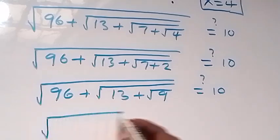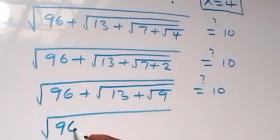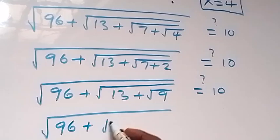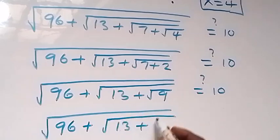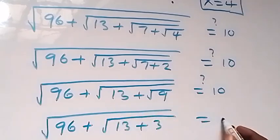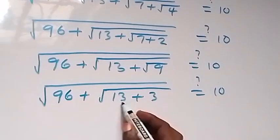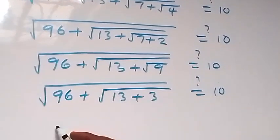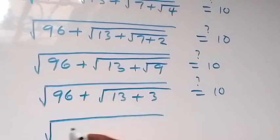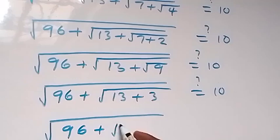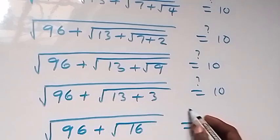Then we have square root of 96 plus square root of 16, which equals to 10. From here, root 16 is 4, and we have square root of 96 plus 4, and is this equals to 10?